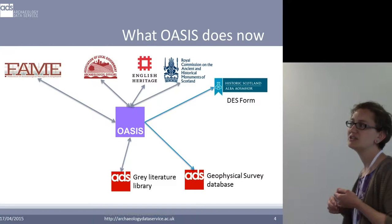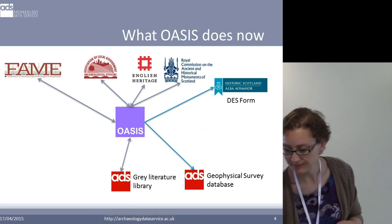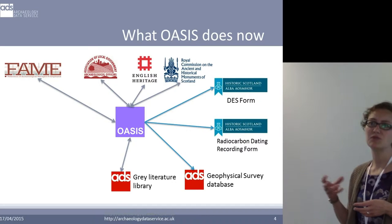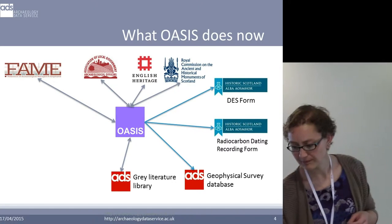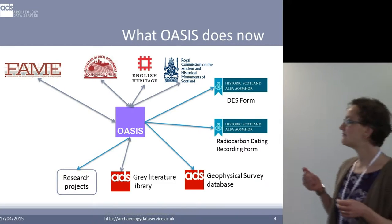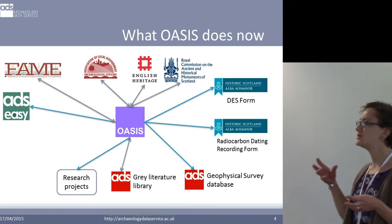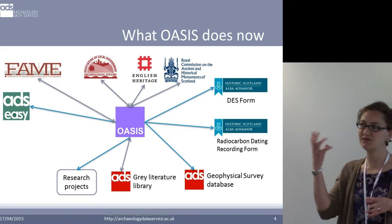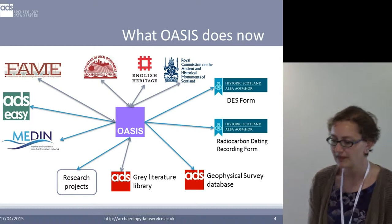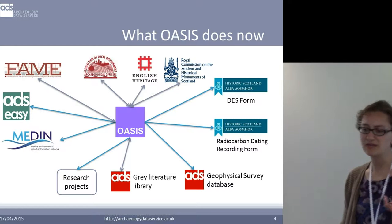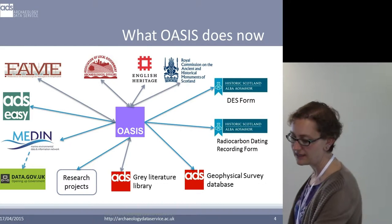It also feeds Discovery and Excavation in Scotland, so that when people are filling in records for that they've got the start of a record from OASIS. They also have an administrative system for requesting radiocarbon dates — the data from OASIS for that event is used to populate that form. It's used in research projects like the Roman Rural Settlement project. OASIS records can also be used by our e-archiving system so you don't have to fill in your project metadata again — you can just pull it out using the OASIS ID. It feeds the MEDIN portal, the Marine Environment Data Information Network, and from there potentially it can go into data.gov. So that's what OASIS does at the moment.